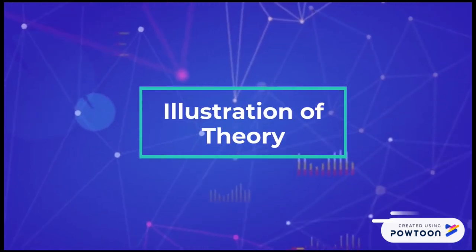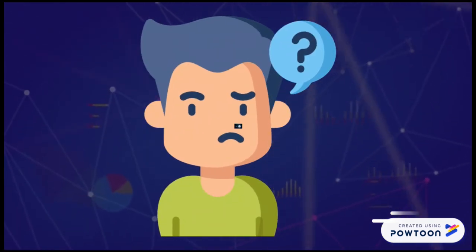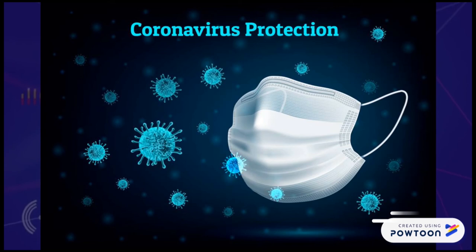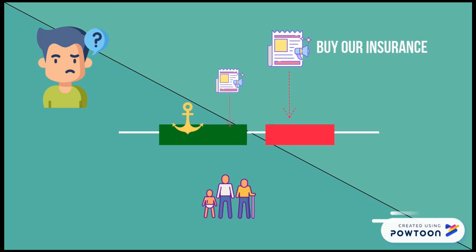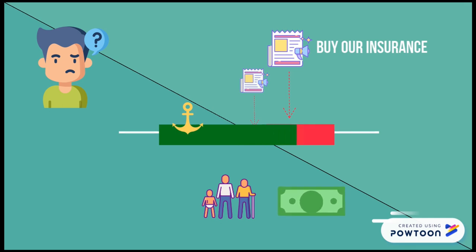Suppose we are an insurance company trying to convince a person to value the impact of coronavirus and buy our insurance. We notice he isn't worried about getting coronavirus and doesn't know much about it — his ego involvement is relatively low. Since we know he cares about his family, we can create messages proving that older people have a higher mortality rate, making him afraid of spreading the virus to his family. Furthermore, since he doesn't know the actual cost of getting the virus, we provide detailed data to broaden his acceptance range. By changing his attitude step by step, we can more easily convince him to accept the message.